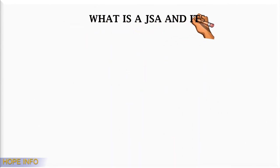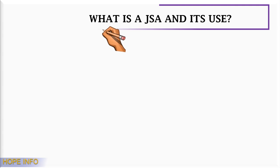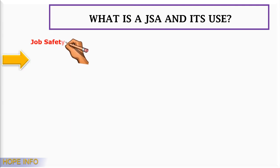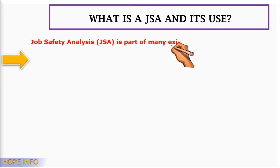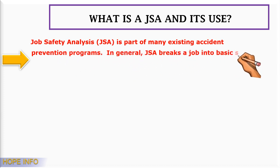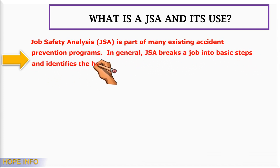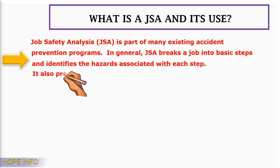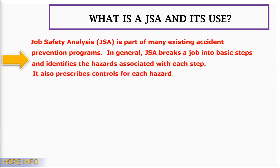What is JSA and its uses? Job Safety Analysis (JSA) is a part of many existing accident prevention programs. In general, JSA breaks a job into basic steps, identifies the hazards associated with each step, and prescribes controls for each hazard.